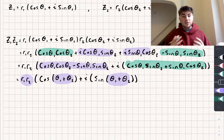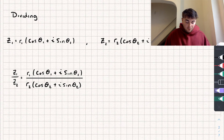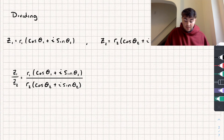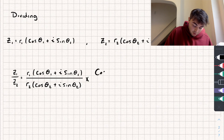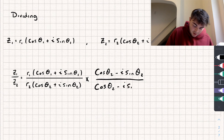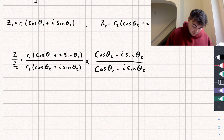Now let's do the same thing but for division. We have the same two generic complex numbers and we're dividing them. To simplify, I'm going to multiply this whole expression by one — by multiplying by cos theta2 minus i·sine theta2, all divided by the same thing, since that equals one.